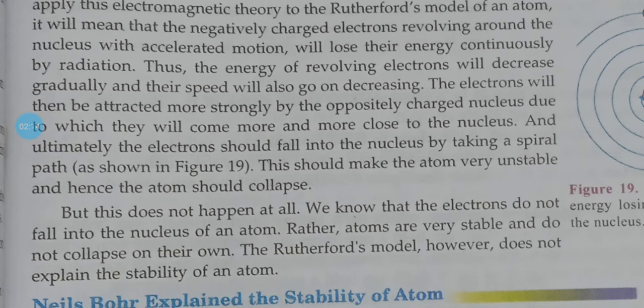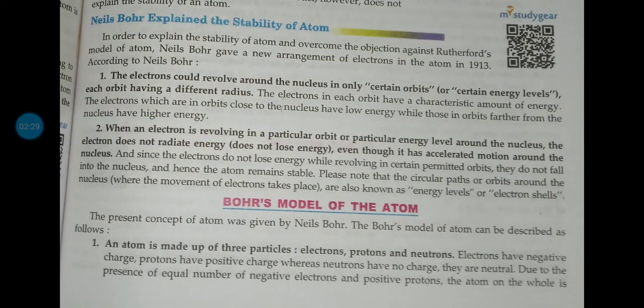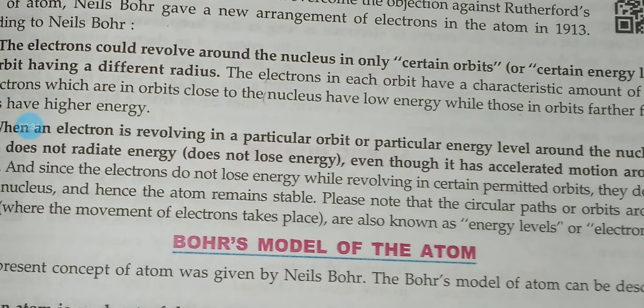The scientist Niels Bohr corrected the limitation of Rutherford's model and explained the stability of the atom. According to Niels Bohr, electrons could revolve around the nucleus only in certain orbits, certain zones, called energy levels.